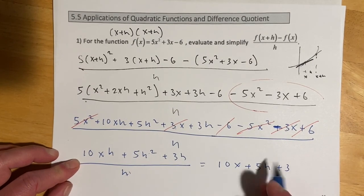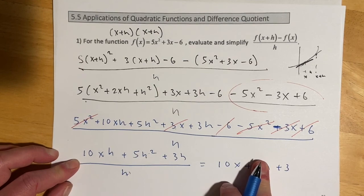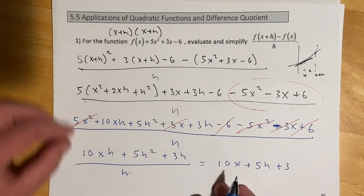So this should end up 10x plus 5h plus 3. And then if you just let that h go to 0, right there it becomes calc 1. And so again, you're going to see this bunch coming up.